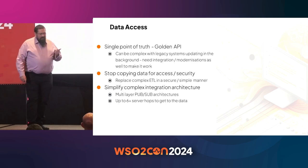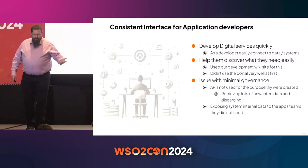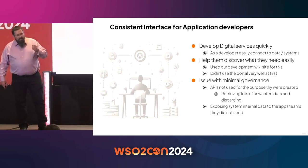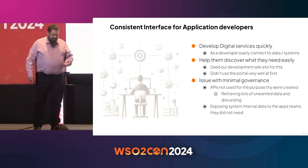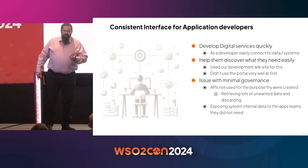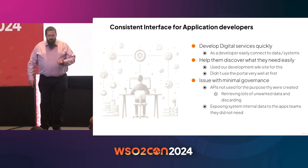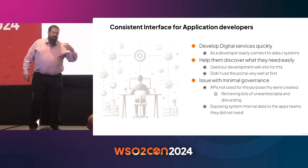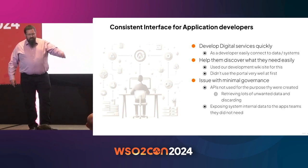We wanted to give a consistent interface for application developers. This was when we were doing our digital transformation. We wanted to really accelerate how we develop digital services. We used to take 12 months to deploy new services. We wanted to be able to create the digital services — the citizen-facing services — a lot quicker. To do that, they needed APIs to access the data quickly so that they could innovate and rapidly compose the services and systems on top.